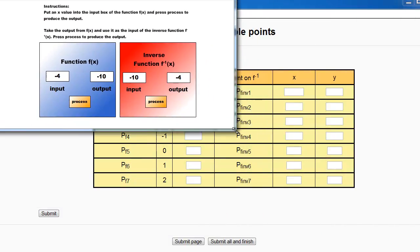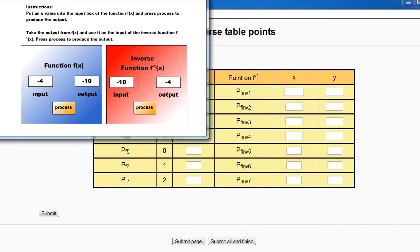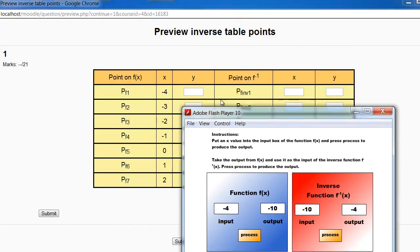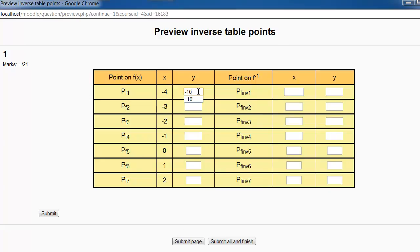What we have to do here is fill that information into our table. When the input was negative 4, the output was negative 10. And in this case, when the corresponding point had an input of negative 10, the output was negative 4.